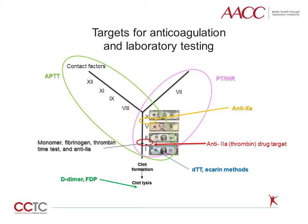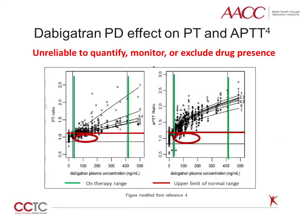As Dabigatran is a direct thrombin inhibitor, the tests that may be affected by its presence include the PT, PTT, thrombin time, ECRIN methods, and other tests that utilize a thrombin substrate.